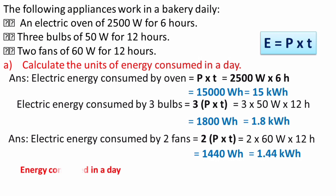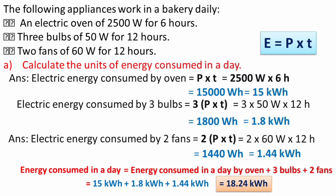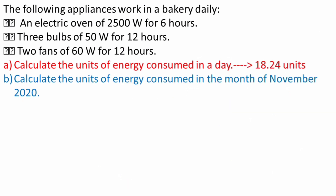These are the energy values consumed by all appliances individually. The total energy consumed in a day is the sum of the energy consumed by these 3 appliances: 15 + 1.8 + 1.44 = 18.24 kilowatt hour. Since 1 kilowatt hour equals 1 unit, the units of energy consumed in a day is 18.24 units.